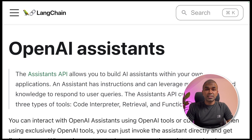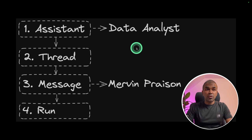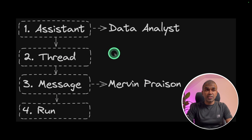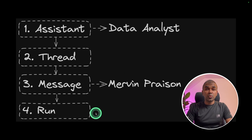In LangChain, there are functions which simplify our work of creating an assistant. Rather than creating an assistant, then a thread, then a message, and then running it, you can do all these things in one function.